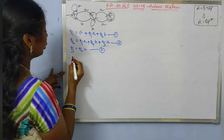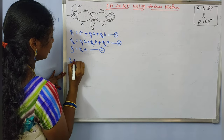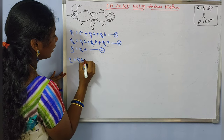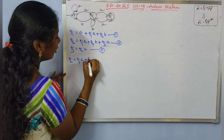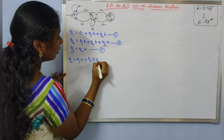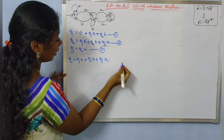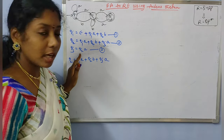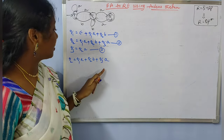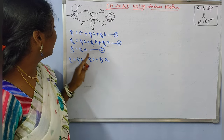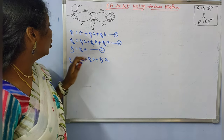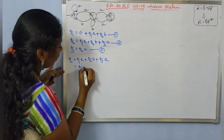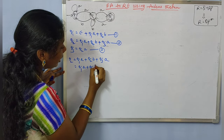First, let us consider equation 2. Equation 2 is: Q2 = Q1·A + Q2·B + Q3·A. And since Q3 = Q2·A, we can substitute to work toward solving Q2.